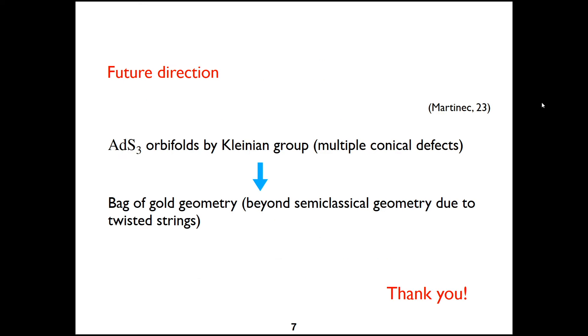There's an interesting future direction inspired by Martinec's recent work. We consider the AdS orbifold by Kleinian group. So it has multiple conical defects in the bulk and we can use these techniques to build a bag of gold geometry. And this will tell us hopefully interesting things about the black hole interior.